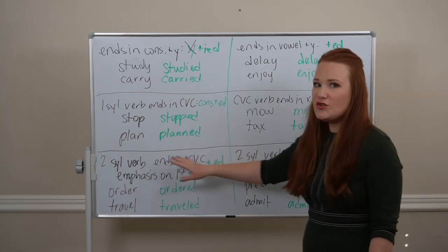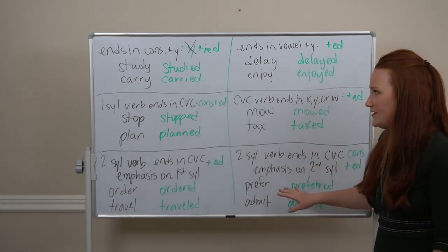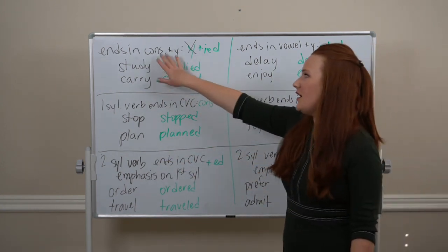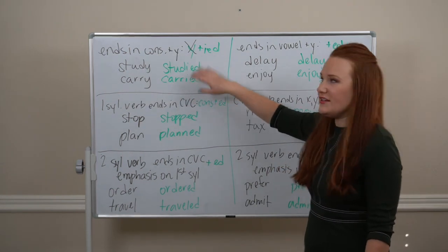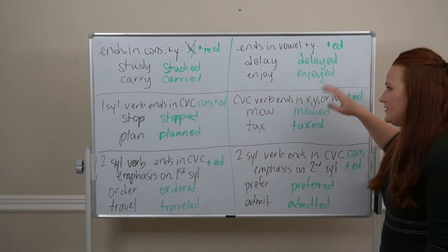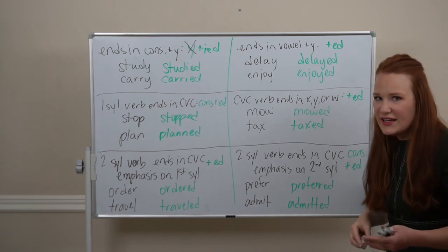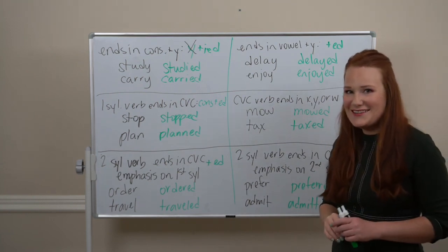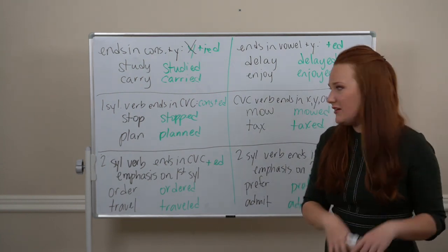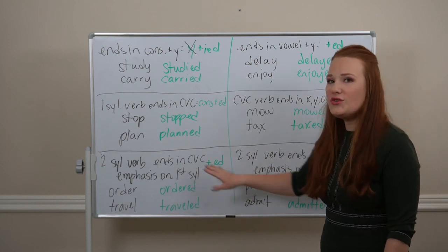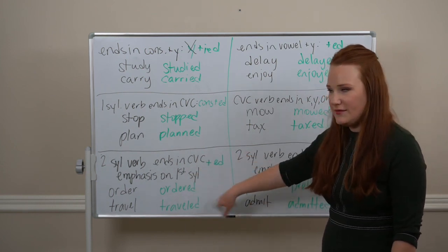Now, these are just for two-syllable verbs that end in CVC. Everything else, if it's a consonant plus Y, IED. If it's a vowel plus Y, ED. If it ends in an E, just a D. If it ends in a consonant, the ED. So, you can go there just for two-syllable with CVC, specifically.